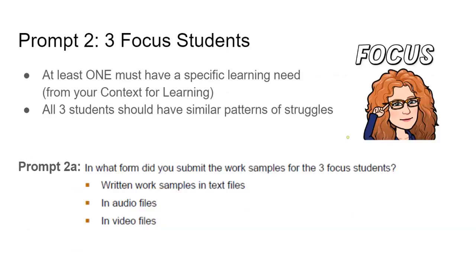Moving on to Prompt 2 — now you have that whole analysis, so you should be able to pick your three focus students. At least one must be a student identified as having a specific learning need, from your context for learning. All three students should have similar patterns of struggles — was it conceptual understanding, procedural fluency, or problem solving? You're focused on what you can target for additional instruction in your re-engagement lesson, and which three students you can pull and teach one extra lesson to that will help them.